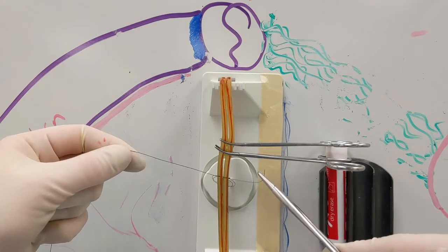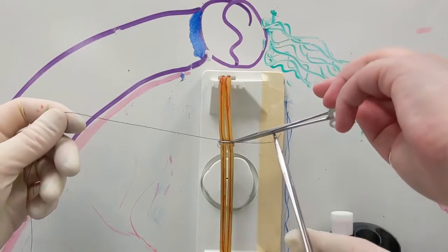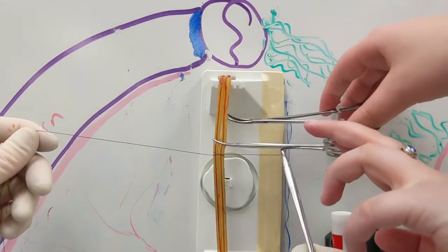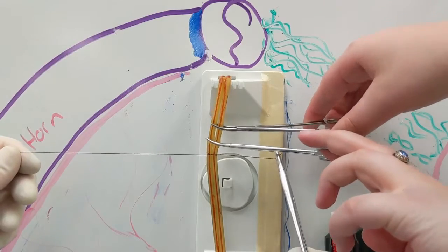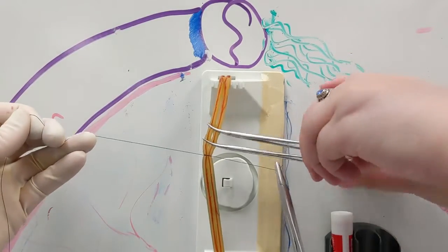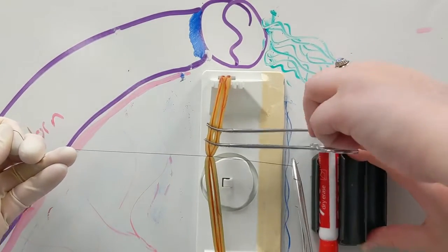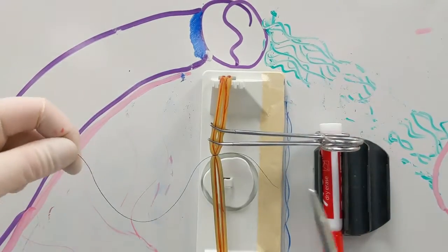And now because this is an ovarian pedicle model, we have our assistant remove that clamp so that we can place this into the crushed tissue. And our assistant replaces the clamp about five to 10 millimeters above the first one. So we'll keep steady tension on it for the first throw, and then as well in the second throw.